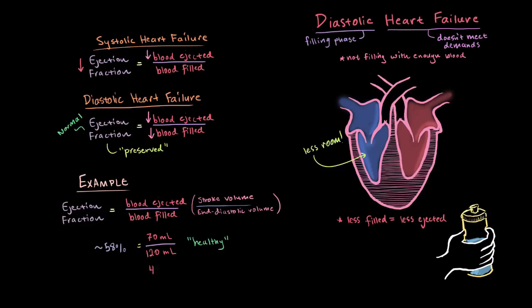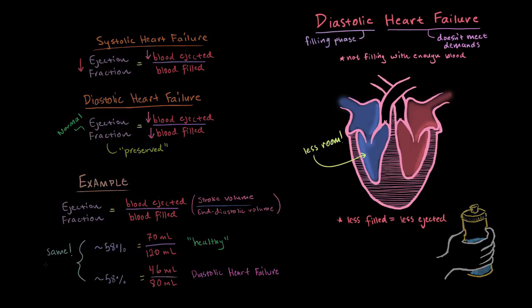What if stroke volume equals 46 milliliters because of heart failure — it's a lot lower, the heart is pumping less blood. But your end diastolic volume is also lower: 80 milliliters. 46 divided by 80 is still 58%, technically in a normal range. So clearly the stroke volume and blood being pumped out is lower, but that's kind of covered up by the end diastolic volume being lower too. But just because that ejection fraction is preserved doesn't mean we're out of the woods — it's still heart failure.